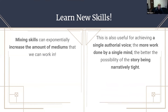Mixing skills can also exponentially increase the amount of mediums we can work in. Somebody who is both a writer and a visual artist can create all sorts of things by utilizing both skills — more than someone who is just one or the other. A writer and visual artist working together can achieve the same thing, which is why teams are so important. That said, individuals with multiple skill sets might have a better chance at achieving a single authorial voice, making the story narratively tighter.